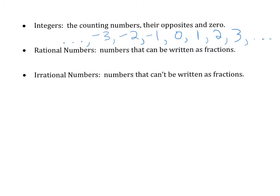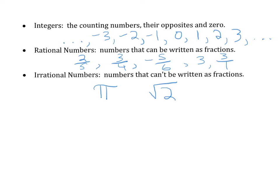There are two other number sets. One is called the rational numbers — we'll get to this in more detail later, but they are numbers that can be written as fractions, for instance 2 fifths, 3 fourths, or negative 5 sixths. Whole numbers like 3 are also rational since 3 equals 3 over 1. Irrational numbers, which we won't cover much in this class, are numbers that cannot be written as a fraction, such as pi or the square root of 2.